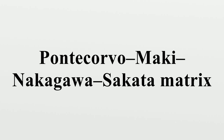Similarly, one can construct an eigenbasis out of three neutrino states of definite mass — nu-1, nu-2, and nu-3 — which diagonalize the neutrino's free particle Hamiltonian. Observations of neutrino oscillation have experimentally determined that for neutrinos, like the quarks, these two eigenbases are not the same; they are rotated relative to each other.